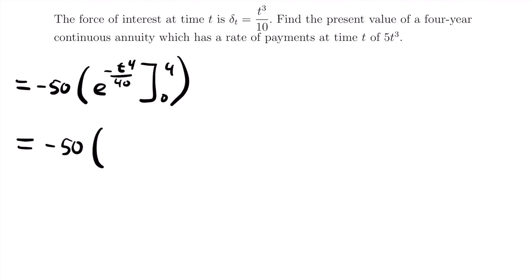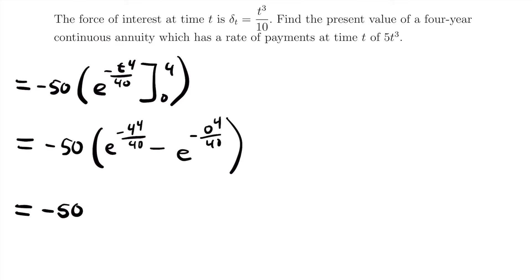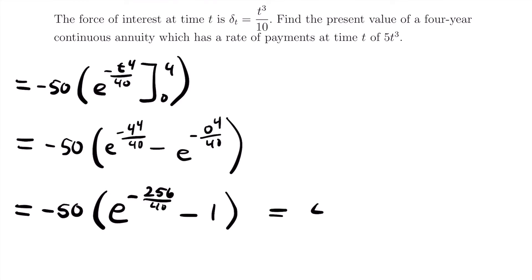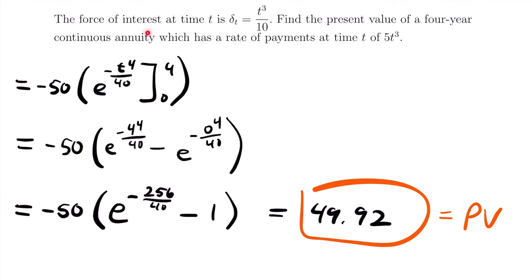Evaluating: negative 50 times [e^(−4⁴/40) minus e^(−0⁴/40)]. Since 0⁴/40 equals 0, e^0 equals 1. And 4⁴ equals 256, so this becomes negative 50 times [e^(−256/40) minus 1]. Plugging this into our calculator gives 49.92. That is the present value of this continuous annuity where delta_t equals t³/10 and the payments are 5t³.